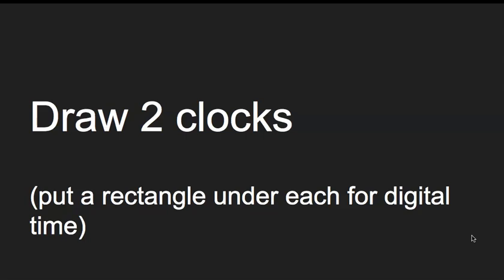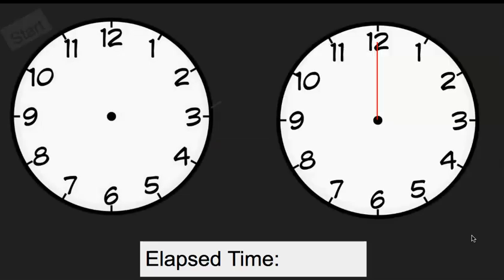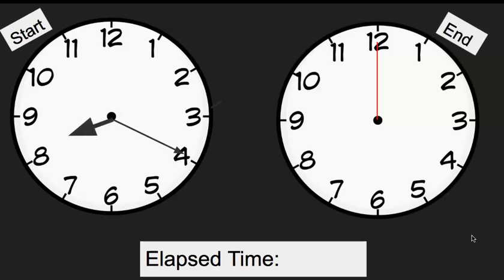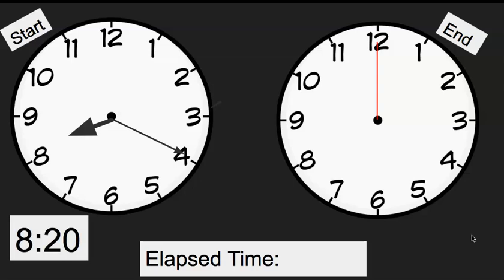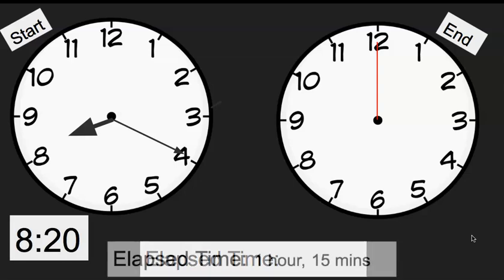Now we're going to move on and try a few more. You're going to want to draw two analog clocks on your paper and then two digital clocks underneath each analog clock, so you can see the time written in both digital and analog. June was baking a cake. She put the cake in the oven at 8:20 — that's our start time. If it needed to cook for one hour and 15 minutes, what time would she take it out?